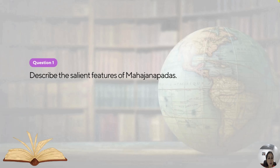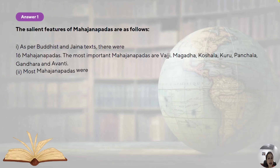Coming on to question number one: describe the salient features of Mahajanapadas. Mahajanapadas were the earliest states of India. The word 'Janapada' is made up of two words: 'jan' meaning people and 'pad' meaning the foot. So it refers to the place where the Aryans settled. Mahajanapadas were formed when these Janapadas combined and took a big form; that big state came to be known as Mahajanapadas.